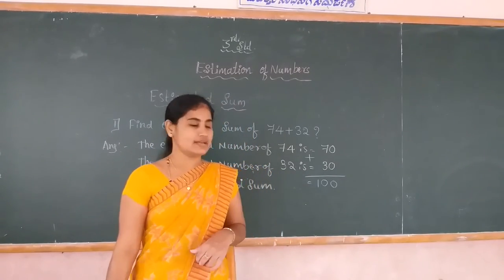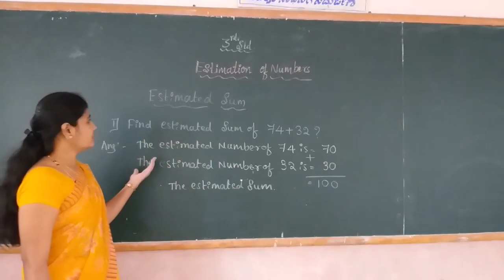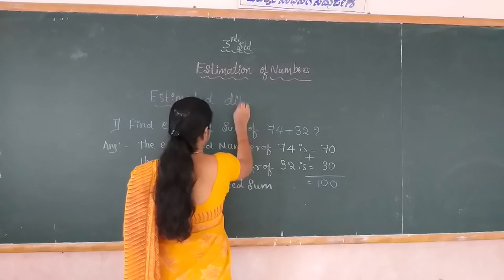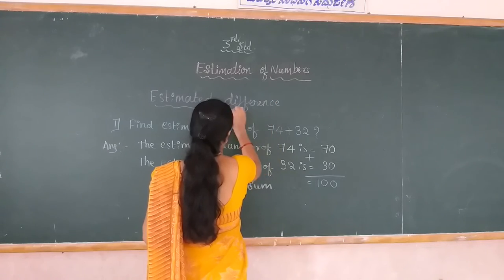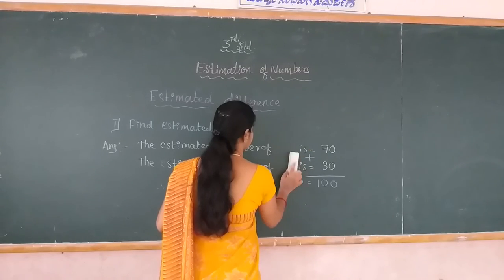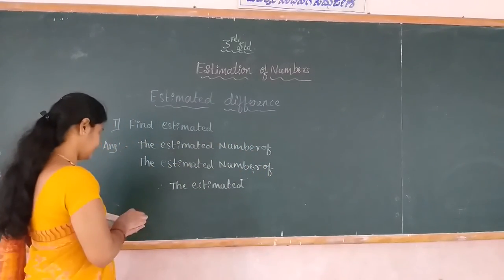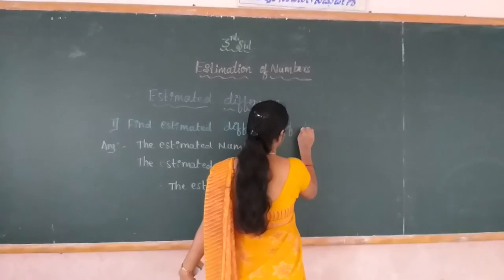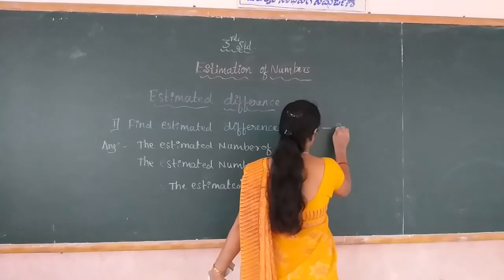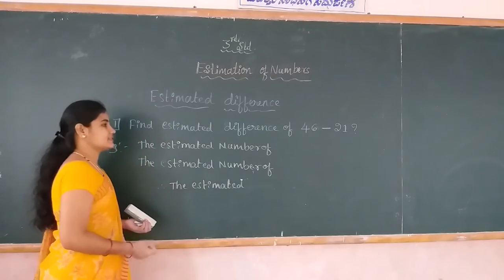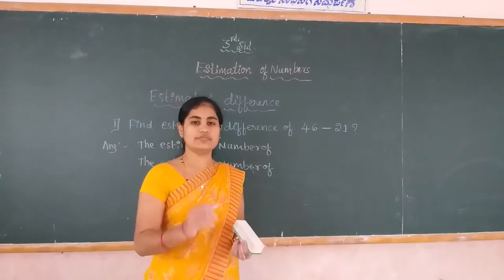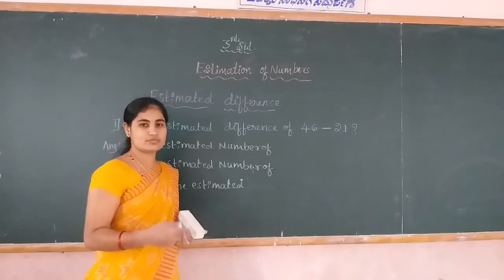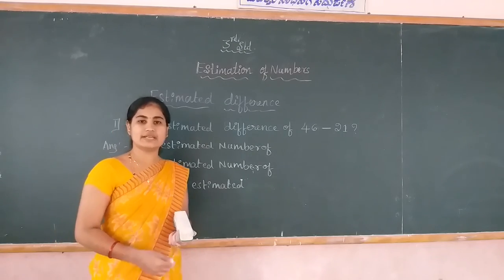Next, we find the estimated difference. The question is: find the estimated difference of 46 minus 21. Difference means you do subtraction. First, write the estimated numbers of 46 and 21, then subtract both estimated numbers to get the estimated difference.